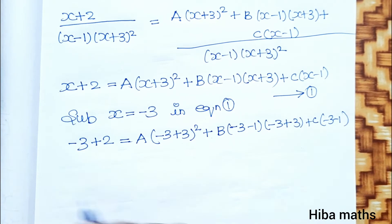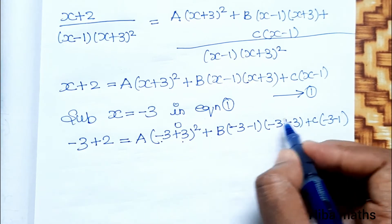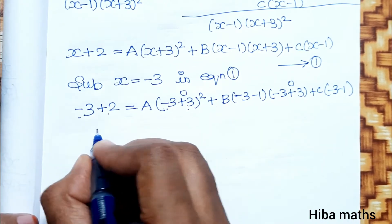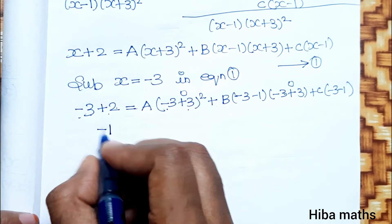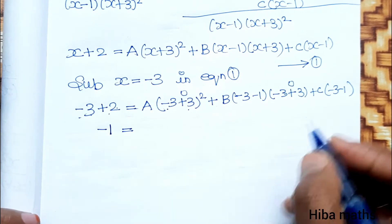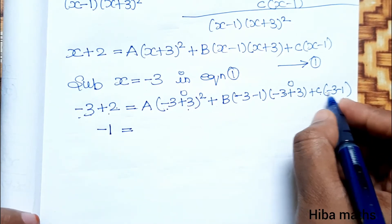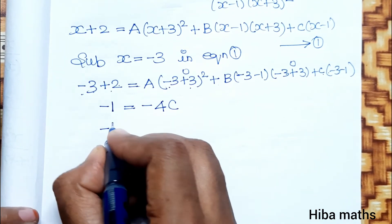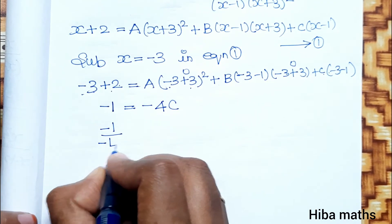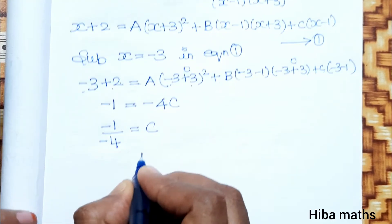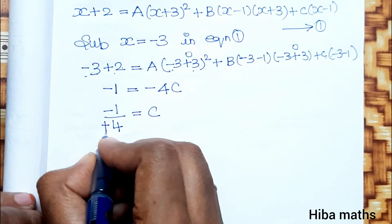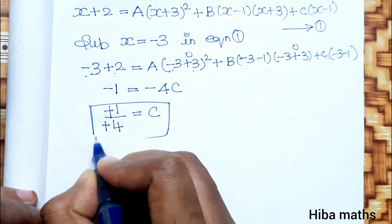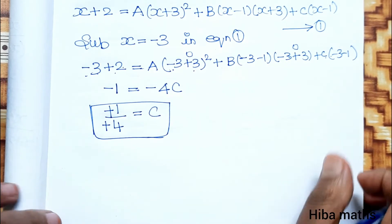To find C, substitute x = -3. We get: -3 plus 2 equals C into -3 minus 1. That gives minus 1 equals C into minus 4. Dividing both sides by minus 4, C is equal to 1 by 4.